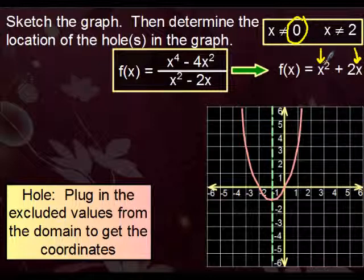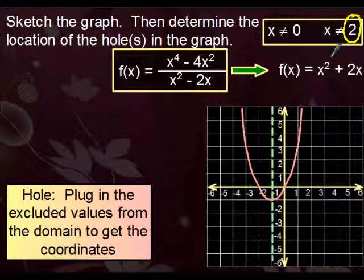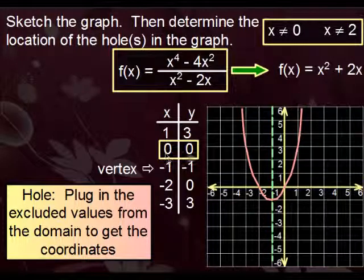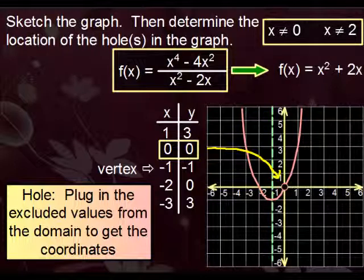If you plug in zero, you'll get one point. And if you plug in two, you'll get a second point. No need to plug in zero. Remember that we already figured that one out. So we know we already have a hole in the graph at the origin.